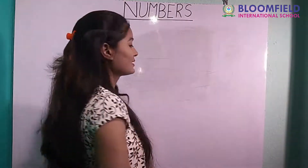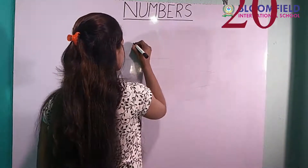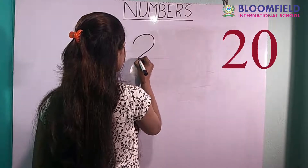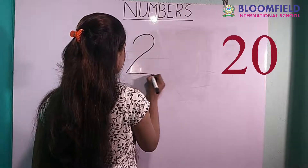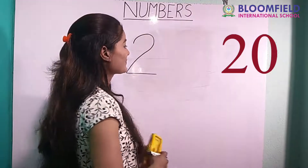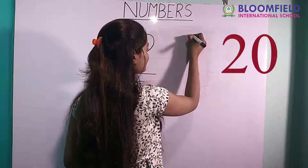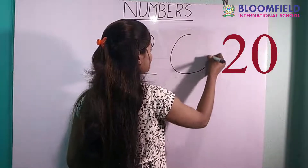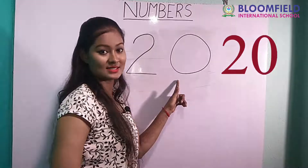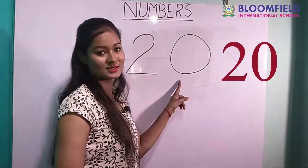So next: small curve, then small slipping line. Good. Then one circle — it means zero. Two zero. Twenty.